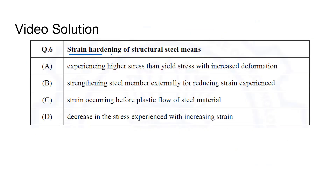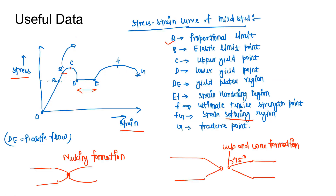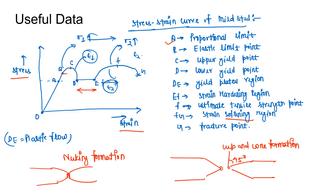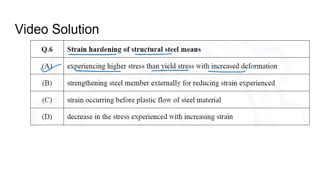Coming to the video solution: strain hardening of structural steel. For Option A — experiencing higher stress than yield stress with increased deformation — if our stress in the yield region is sigma 1 and in the strain hardening region is sigma 2, and the corresponding strains are epsilon 1 and epsilon 2 respectively, then as stress increases from sigma 1 to sigma 2 the strain also increases, so epsilon 2 is greater than epsilon 1. Therefore Option A is correct.